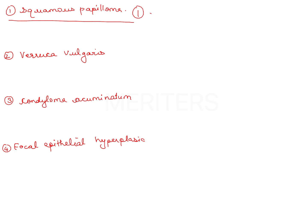Verruca vulgaris, also known as the common wart, is a contagious skin disease most commonly seen in children. It is a primary lesion of the skin but can also occur in the oral cavity on the lip or palate. It is a sessile, soft, cauliflower-like lesion that usually resolves in two years or may need excision.